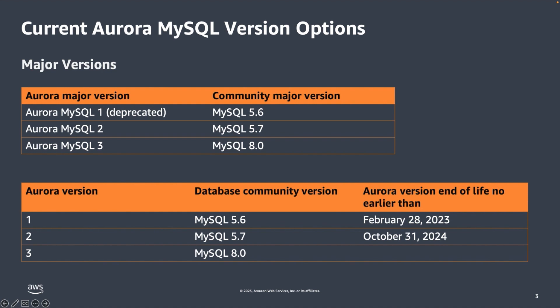Let's take a look at how Amazon Aurora MySQL versions correlate with the MySQL community versions and how long the Aurora major versions remain available for. Amazon Aurora major versions remain available at least until the community end of life for the corresponding community version. Aurora MySQL version 1, which is compatible with MySQL community version 5.6, was deprecated on the 28th of February 2023.